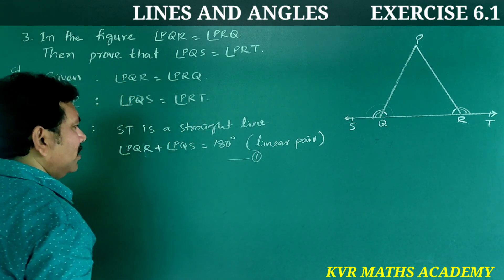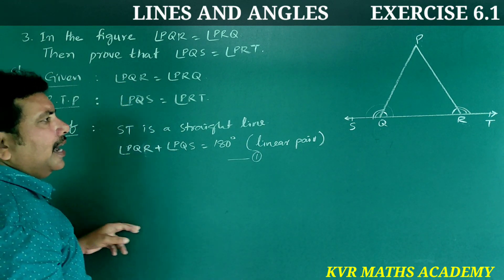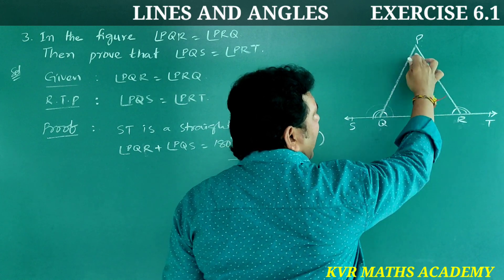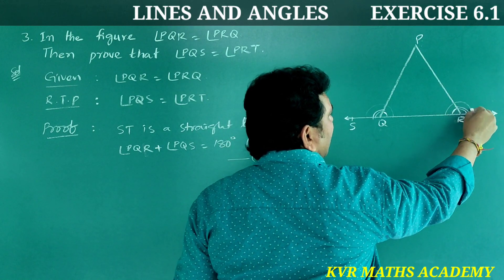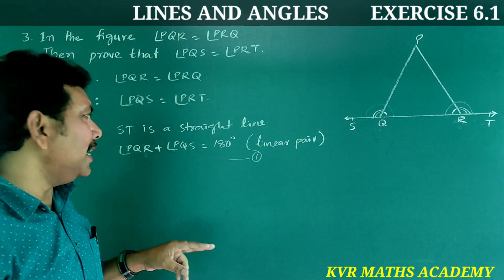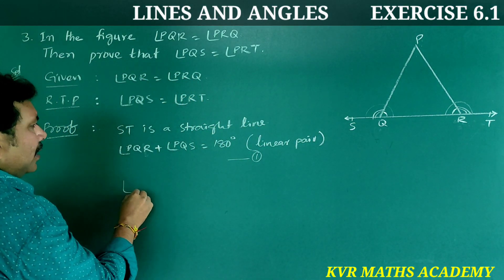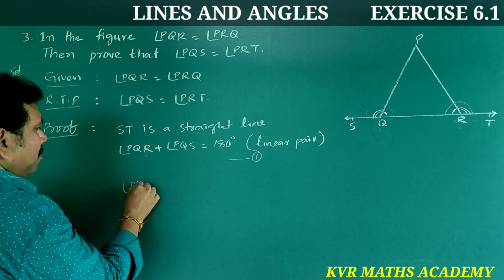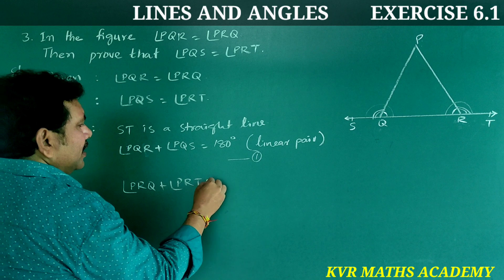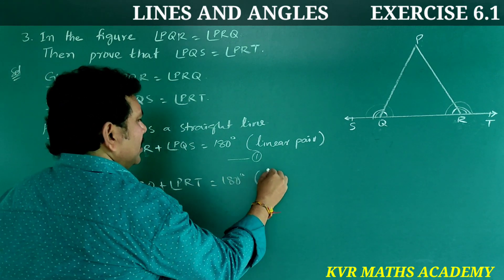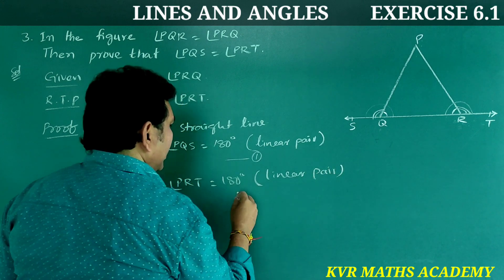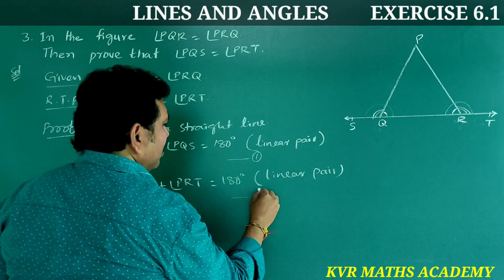In the same way, at point R, angle PRQ plus angle PRT — the sum of these two angles — equals 180 degrees. This is also a linear pair. So angle PRQ plus angle PRT equals 180 degrees. Take this as equation number two.